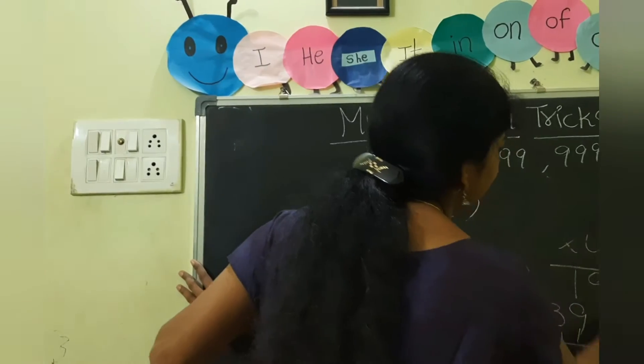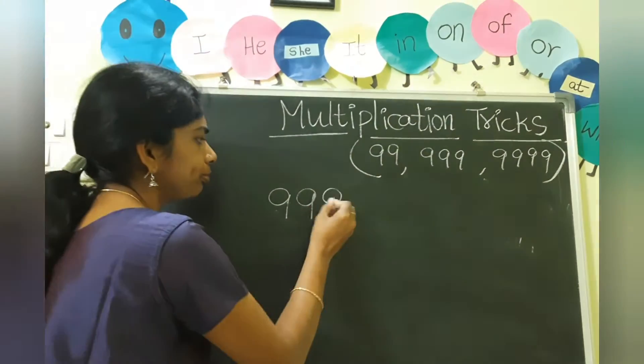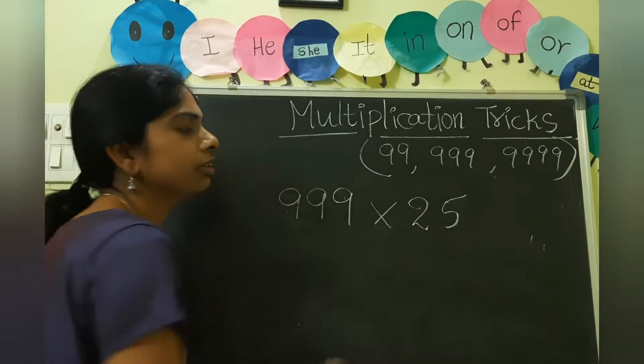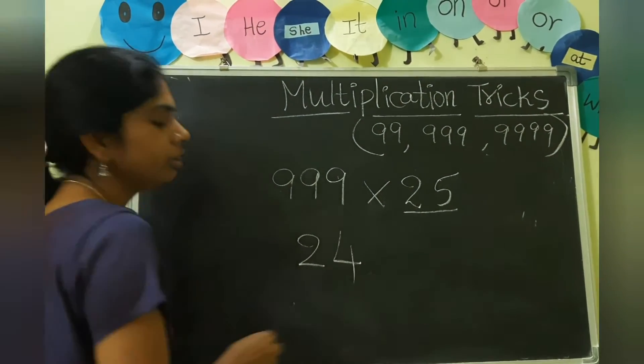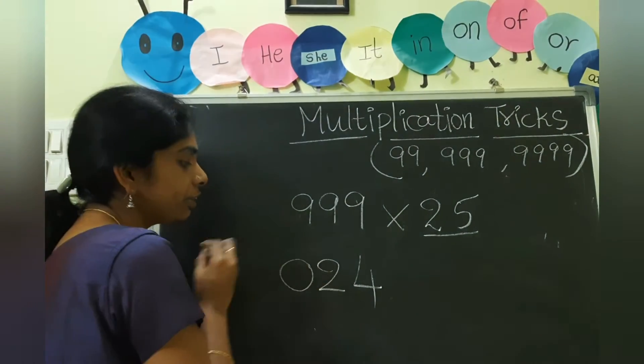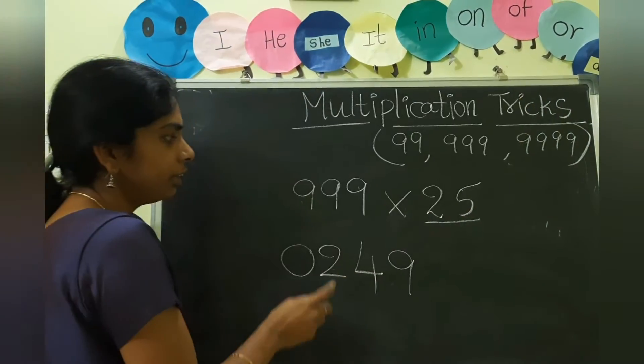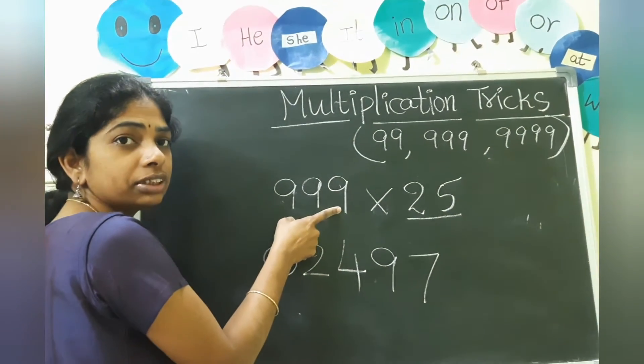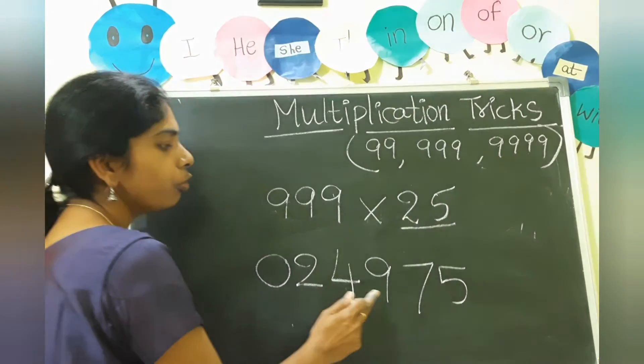Now I will take the 3 nines. So for this, how we have to do? 999 into 25. Now the same process, 25 before is 24. Now 0 plus 9 equals 9. 2 plus how much gives 9? 7. 4 plus how much gives 9? 9 minus 4, 5. So the answer is 24,975.